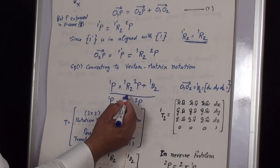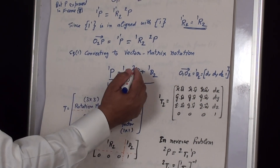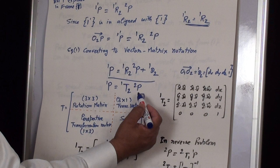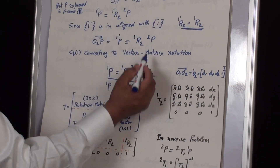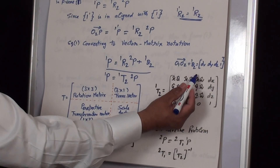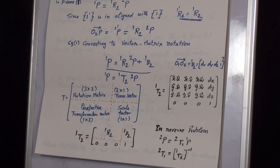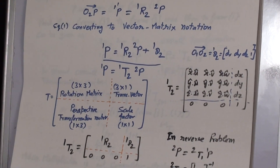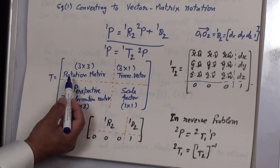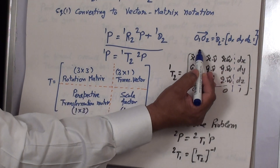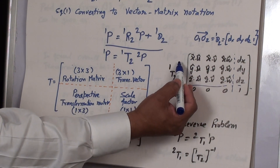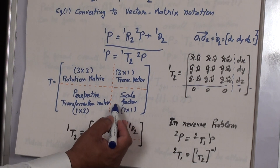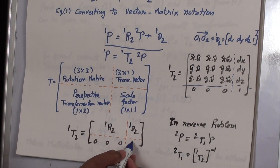The equation is converted into vector-matrix notation, considering the case of translation alongside the pure rotation equation. Writing the transformation of Frame 2 as seen from Frame 1 as a 4x4 matrix gives the homogeneous transformation matrix. This matrix includes: a 3x3 rotation matrix representing orientation, a 3x1 translation vector, a 1x3 perspective transformation row, and a scale factor of 1 — all relevant to manipulator kinematics.